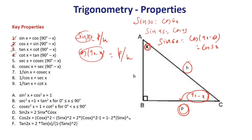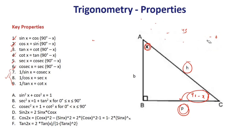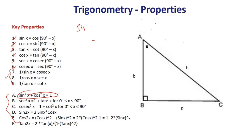Key identities to remember: sin²x + cos²x = 1, which gives sin²x = 1 − cos²x. Beyond this, sec²x = 1 + tan²x and cosec²x = 1 + cot²x. You can verify these using specific values, for example x = 30 degrees.